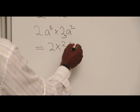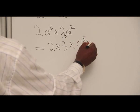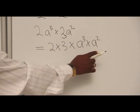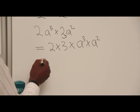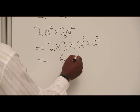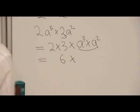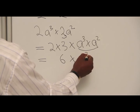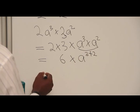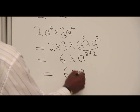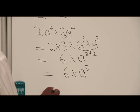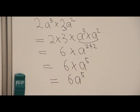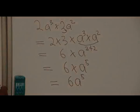Then a raised to power 3 will multiply a raised to power 2. It's like we are collecting like terms. This will now become 6, and applying the law of indices of multiplication, it becomes a raised to power 3 plus 2, and eventually it will be 6 times a raised to power 5, which is 6a raised to power 5. This is the multiplication rule.